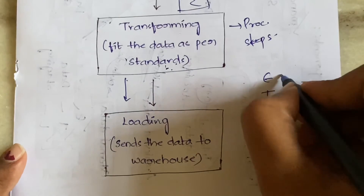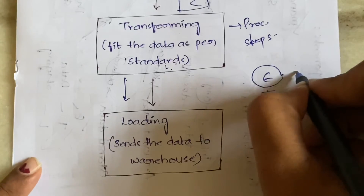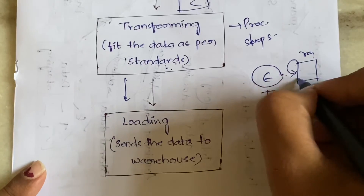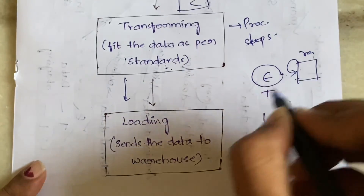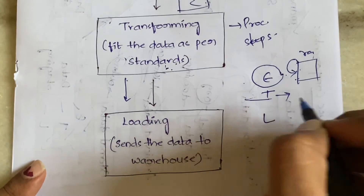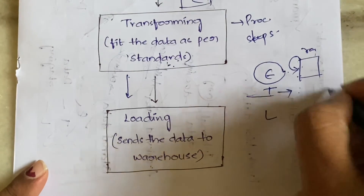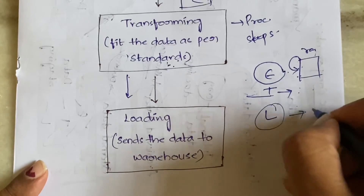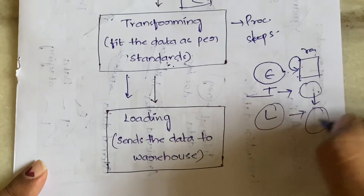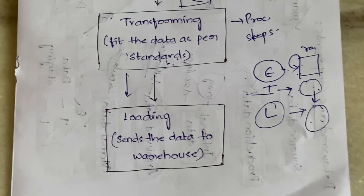To summarize: data is collected from different external sources — not just collected, but we also analyze and select only the important required data. After extracting, we perform transformation, converting the data into standard conventions. Then we load the data into the data warehouse, storing whatever data we have there. This is the ETL process.